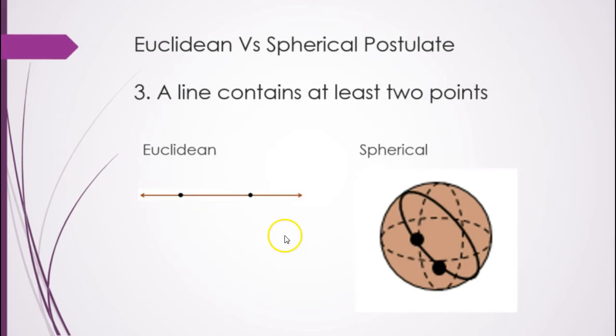A line contains at least two points. Two points here, two points here. Remember, a line is a great circle.